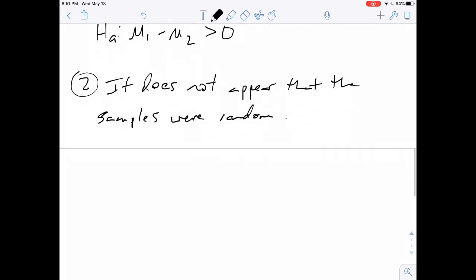Next condition, we want to have a normal sampling distribution. Remember we can do that if our sample sizes are over 30. So N1 was 54 which is greater than 30, and N2 is 51 which is also greater than 30, so that meets that condition.